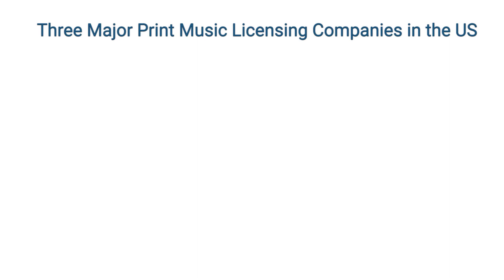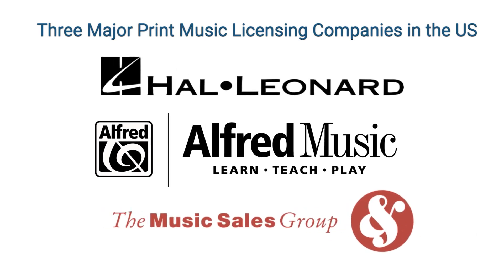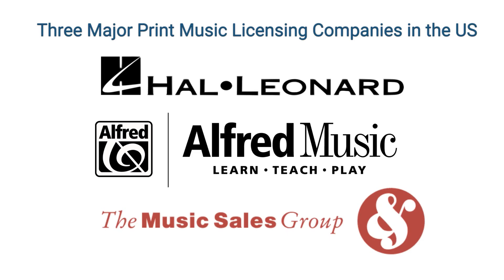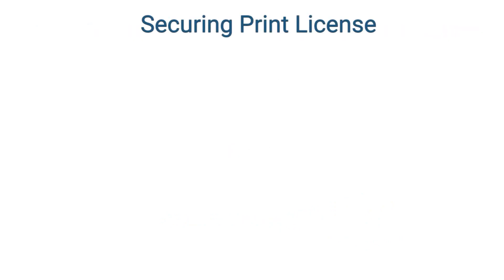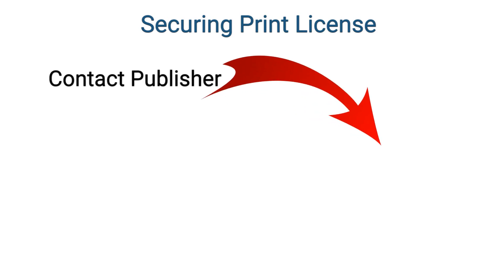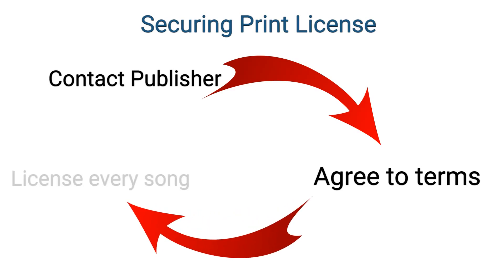Securing a print license: only three major manufacturers of secular, non-religious, printed music exist in the United States — Hal Leonard, Alfred, and Music Sales. Other specialty sheet music publishers exist for niche genres such as classical or Christian contemporary music. Most of the time, securing a print license is relatively easy. The licensee must reach out to the publisher directly and agree to terms, and must obtain a license for each song he or she intends to print.